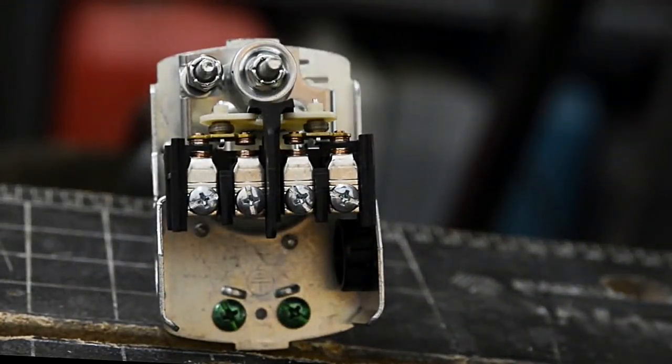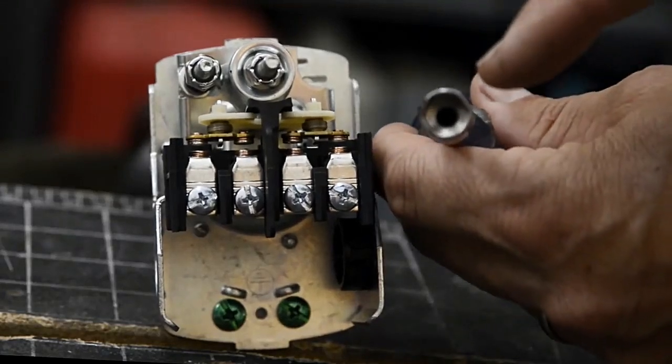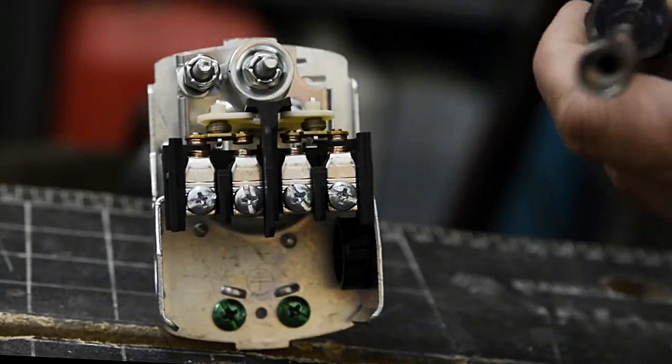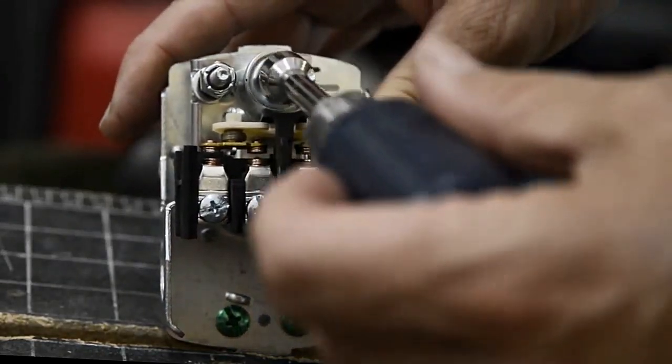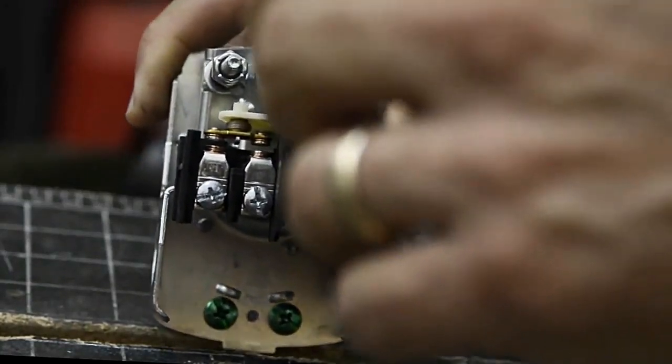When you're adjusting these screws, you want to have a nut driver that's hollow. I don't know if you can see that, but Craftsman's are. They have a hollow shaft and that way it'll fit over the threaded rod and you can adjust it counterclockwise and clockwise.